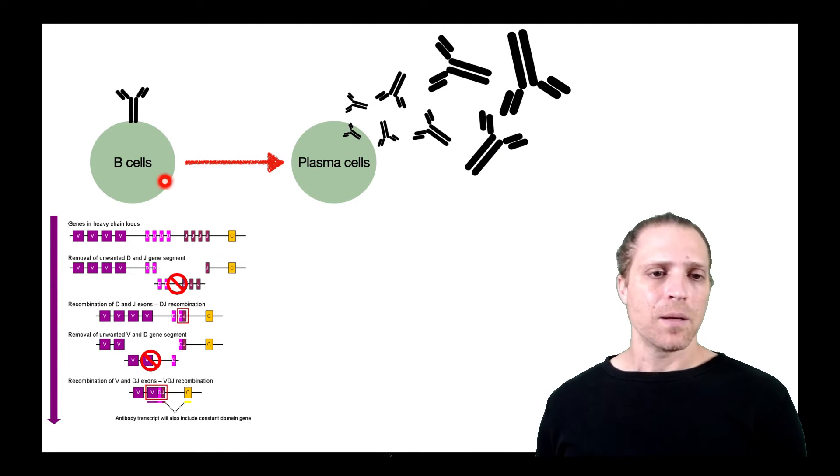So we mentioned that B cells harbor or express the B cell receptor, which is a form of antibody that is stuck on the membrane. So the B cell receptor is comprised of several genes, specifically the V, D, J, and C genes.